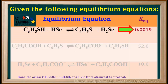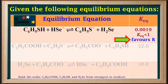We'll start by looking at the KEQ value for the first reaction. We see it is 0.0019, which is less than 1. Recall that when KEQ is less than 1, reactants are favored at equilibrium.